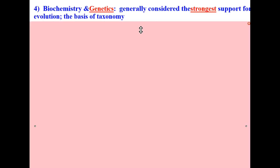The fourth piece of evidence most scientists believe gives credibility to the theory of evolution is biochemistry and genetics. This is generally considered the strongest support for evolution and is the basis of taxonomy.